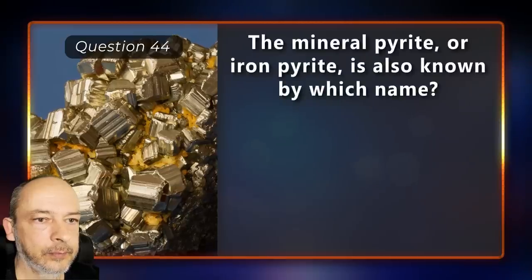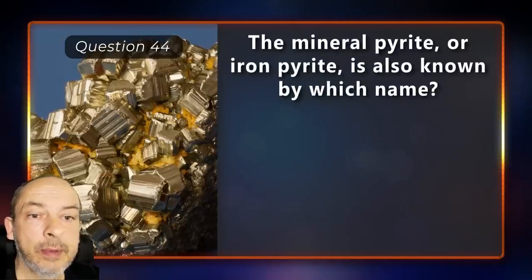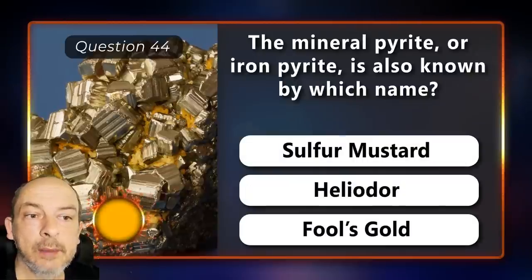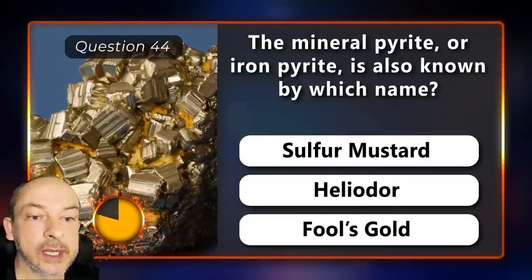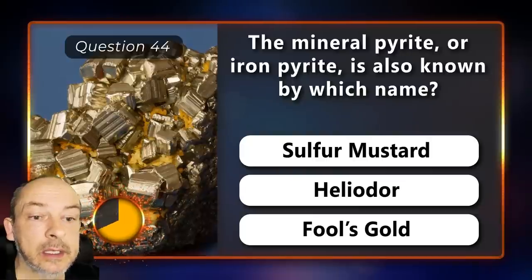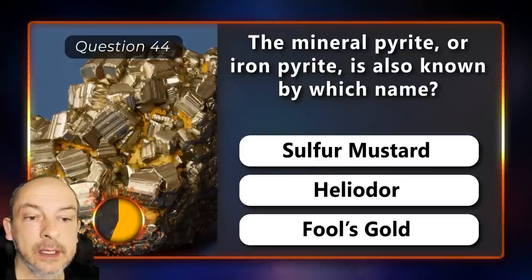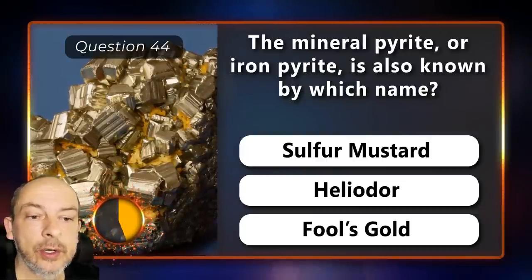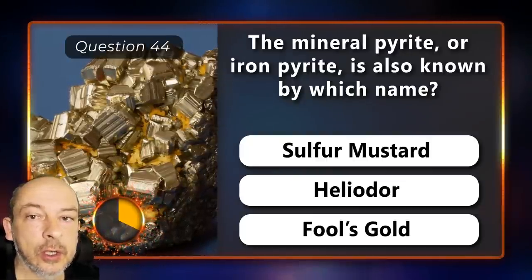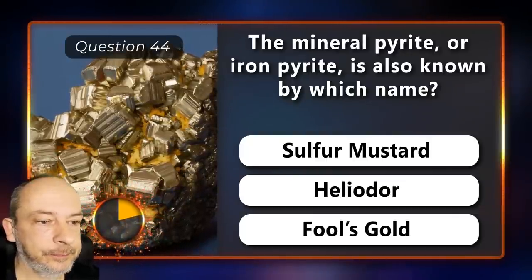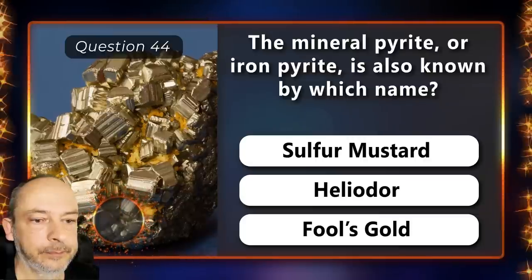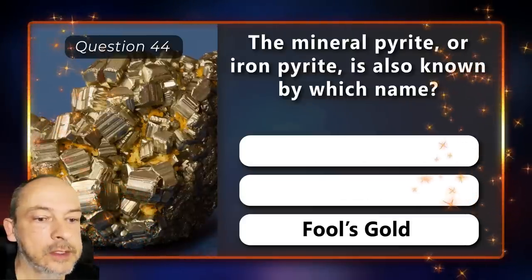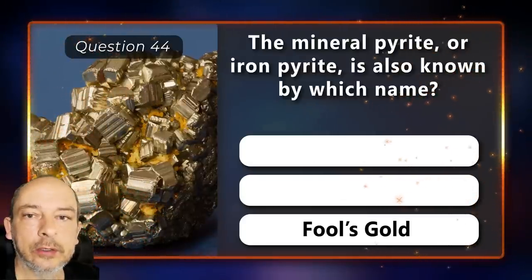The mineral pyrite or iron pyrite is also known by which name — sulfur mustard, heliodor, or fool's gold? The answer is fool's gold.